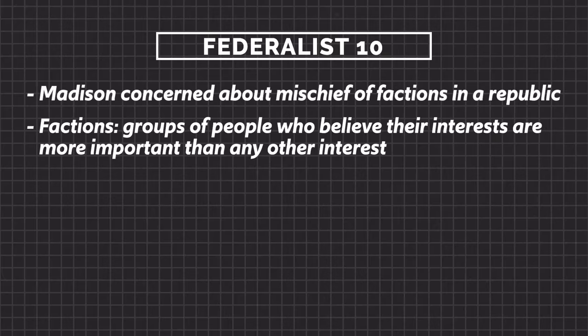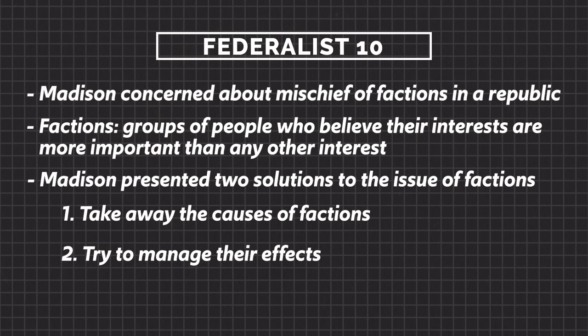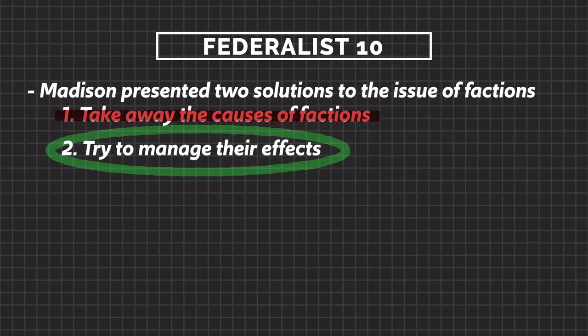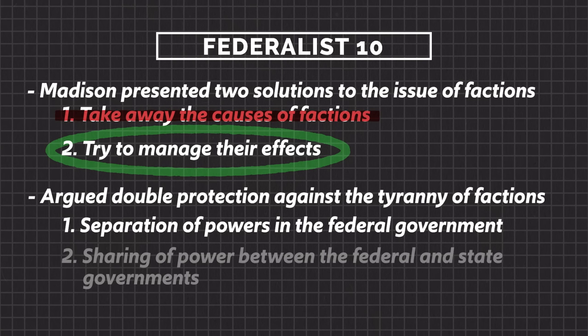Madison said there were basically two solutions: either take away the causes of factions or manage their effects. Taking away the causes would mean stripping people of their liberty, so the solution was worse than the problem. Therefore, the only way was to mitigate the negative effects of factions. He appealed to the size and diversity of the US population, arguing that with so many competing interests, none could prevail all the time — so a large republic would successfully deal with factions. He also argued there was double protection from the separation of powers at the federal level and the sharing of power between federal and state governments.